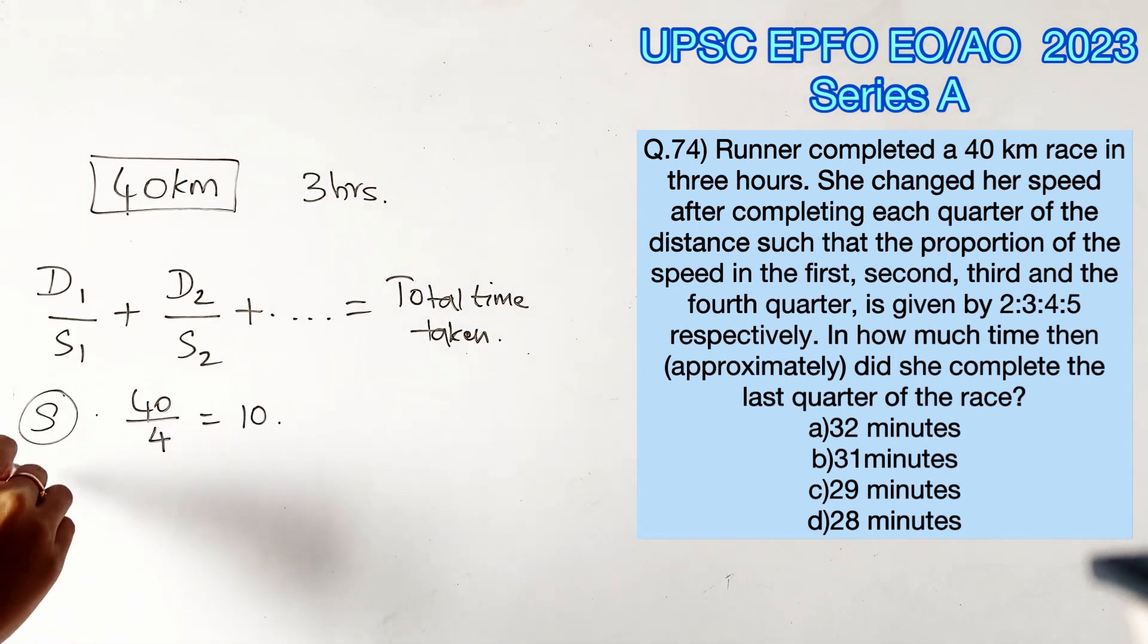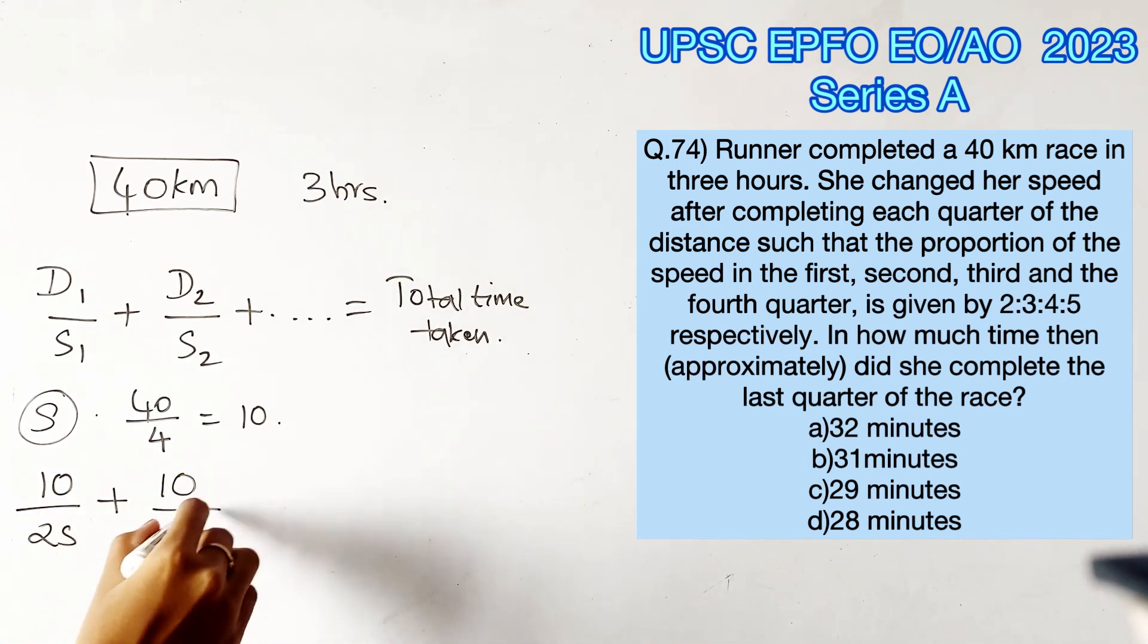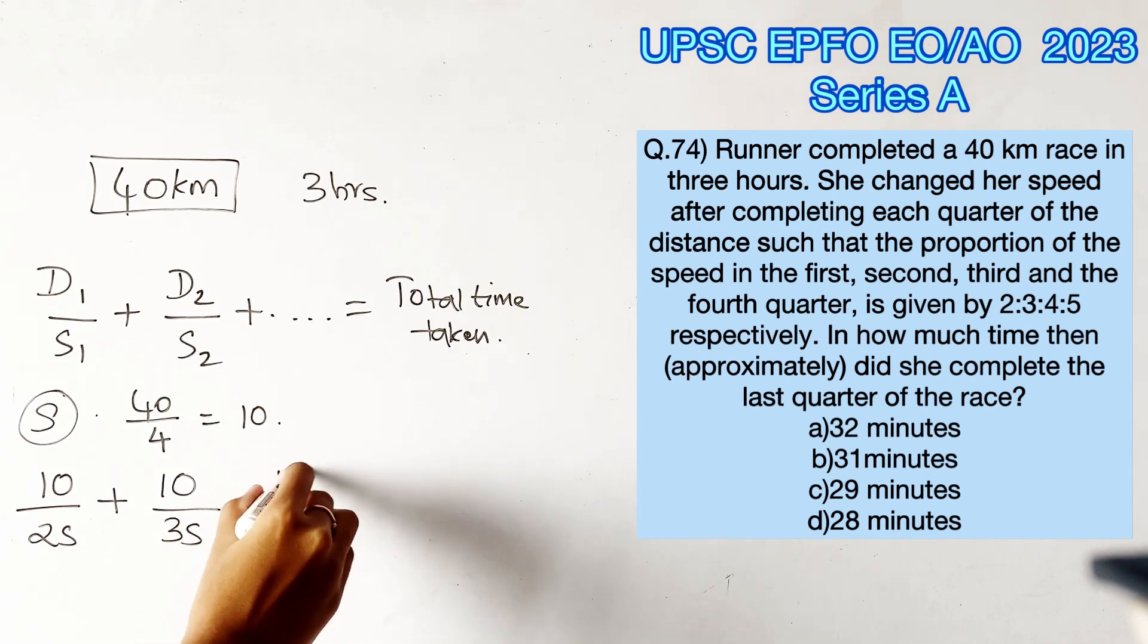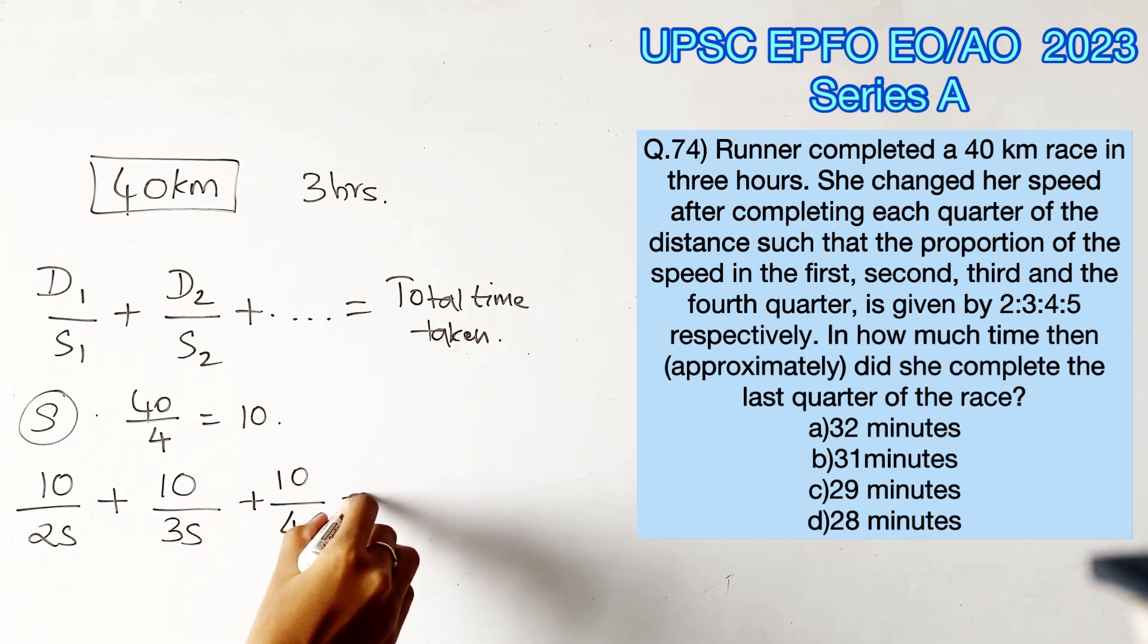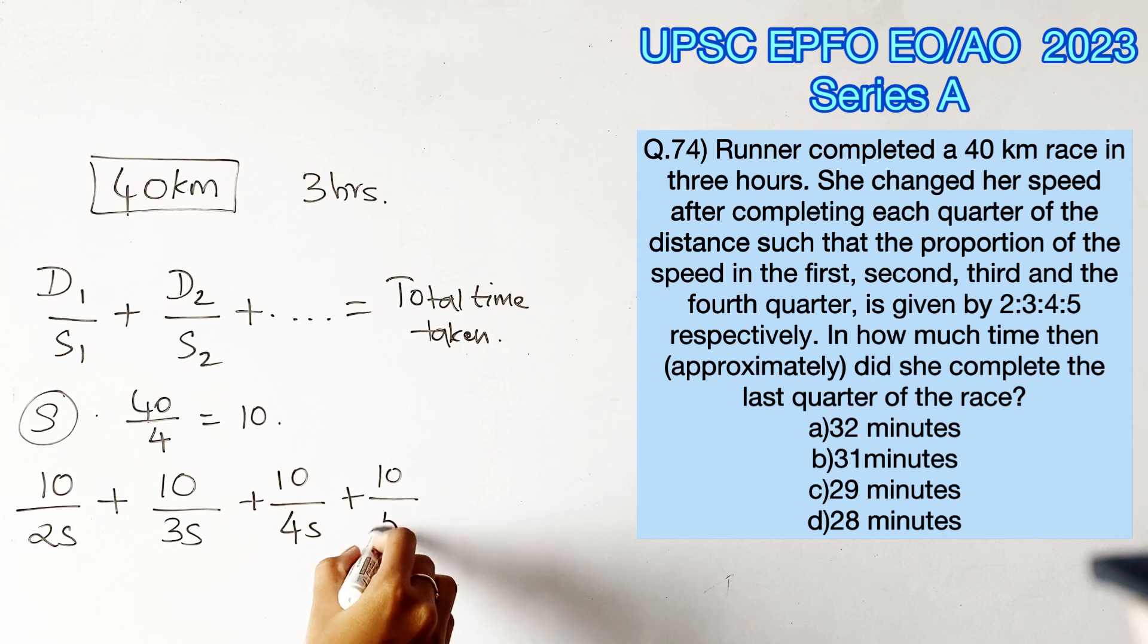This means for the first 10 kilometers she has traveled with the speed of 2s, the second 10 kilometers with the speed of 3s, the next 10 kilometers with the speed of 4s, and the last 10 kilometers with the speed of 5s. Now adding the individual time taken we will get the total time taken, that is 3 hours.